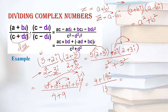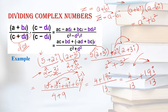Now write in standard form. The 13 divides both the 4 and the 19i, so separate them: write 4 over 13, then 19i over 13. This is the standard form of a complex number — real part then imaginary part. Hope you understand this example. To clear your doubts, let's take one more example.